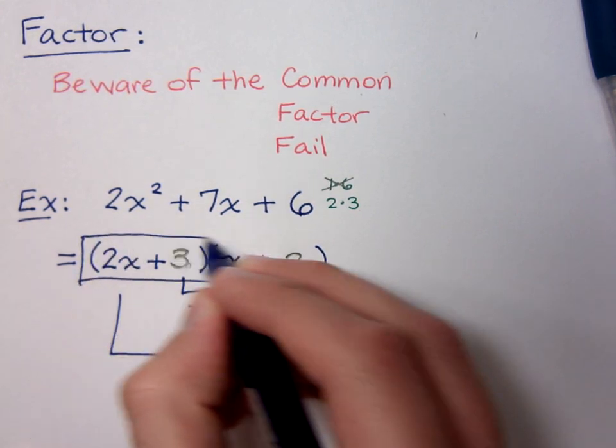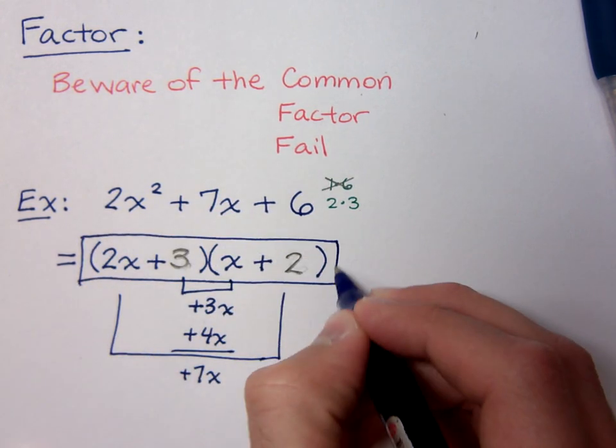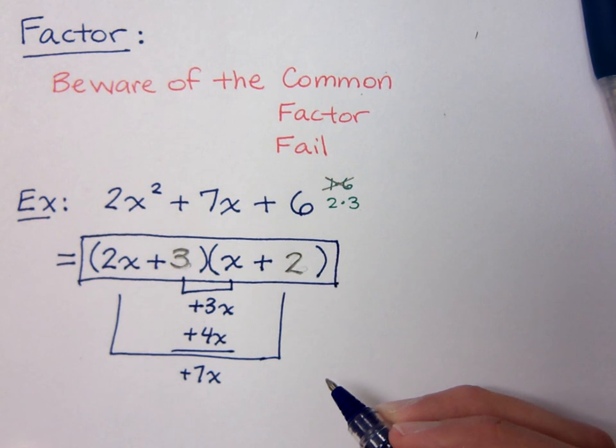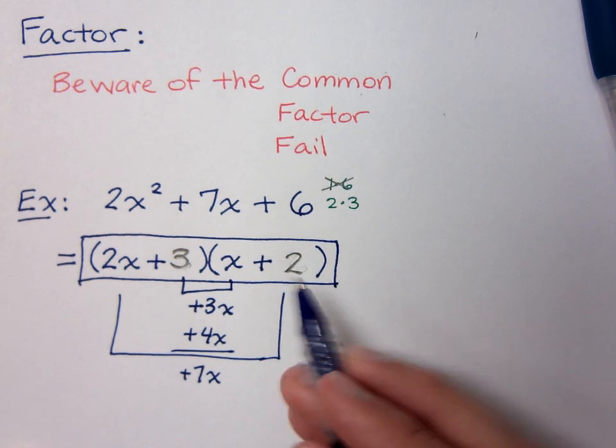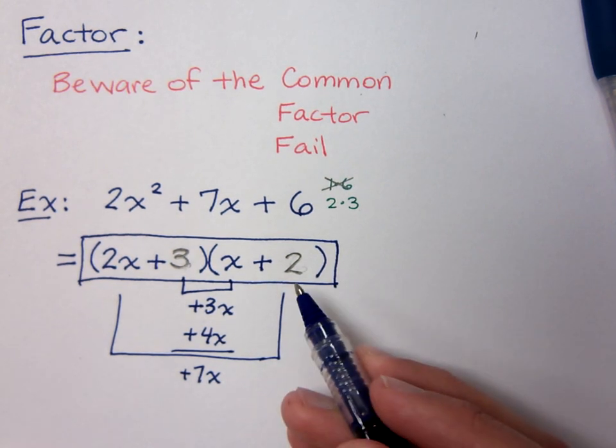When we talk about common factors, we're talking about common factors other than 1, because everybody has a common factor of 1 — but that's not going to help us.